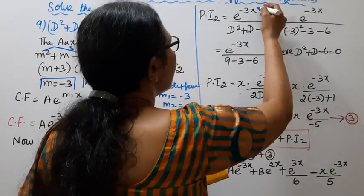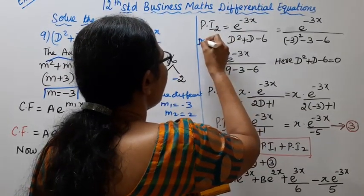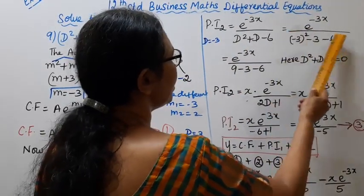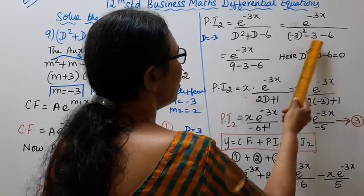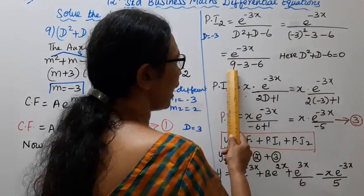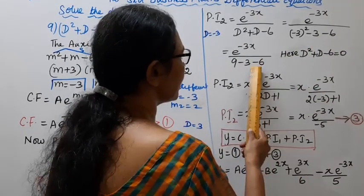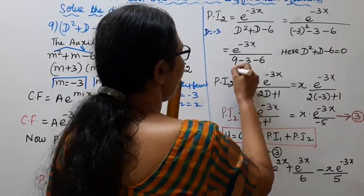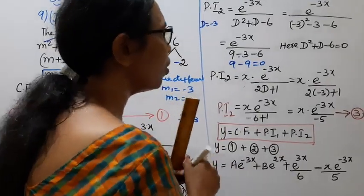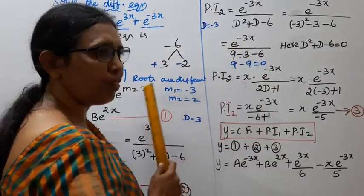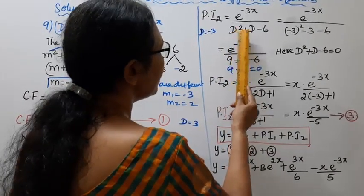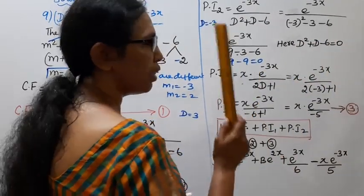For particular integral 2, we have e^(−3x) divided by (D² + D − 6). Replacing D with −3: (−3)² + (−3) − 6 = 9 − 3 − 6 = 0. The denominator equals 0, so we cannot use the direct method.